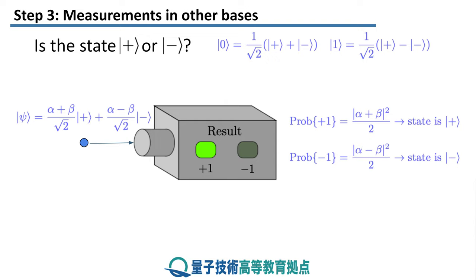The probabilities are not just mod alpha squared and mod beta squared. They're in fact |alpha plus beta|² divided by 2 and |alpha minus beta|² divided by 2. Because we were asking a different question — is the state in a plus or a minus? — the state changes from psi and goes to |+> or |−> after the measurement, depending on the measurement outcome. This measurement is known as measurement in the Pauli x basis.